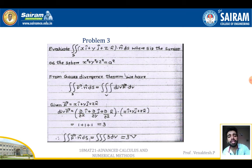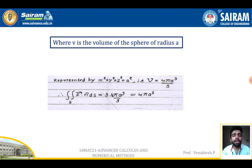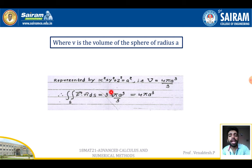Replacing div F = 3: ∬ F·n dS = ∭ 3 dV = 3 × V, where V is the volume of the sphere of radius a. Since V = (4/3)πa³, the result is 3 × (4/3)πa³ = 4πa³.